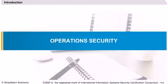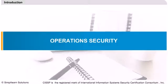Hello and welcome to Lesson 10 of the CISSP Certification Course by Simply Learn. This lesson is about Operations Security. Operations Security is one of the 10 domains of the Common Body of Knowledge, CBK, for the CISSP Certification Exam. The Security Operations domain is used to identify critical information and the execution of selected measures that eliminate or reduce adversary exploitation of critical information. It includes the definition of the controls over hardware, media, and the operators with access privileges to any of these resources.